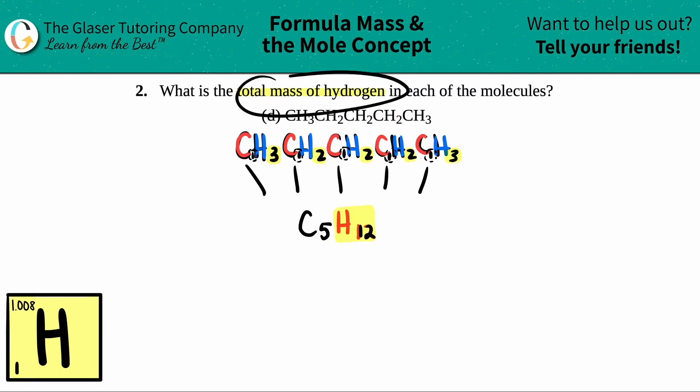In order to find the total mass of hydrogen, we need to find out how many total of the hydrogens I have in my compound, and in this case I have 12 hydrogens. Now all we're going to do is we're going to take that 12 and we're going to multiply it by the mass. Now the mass comes from the periodic table.